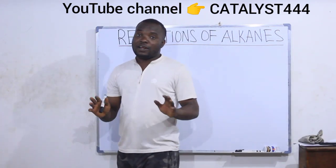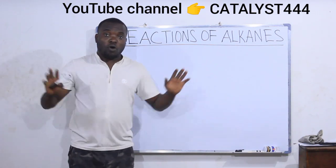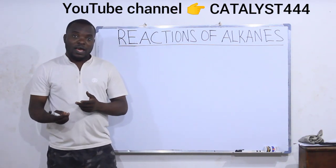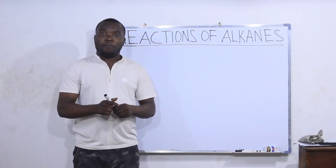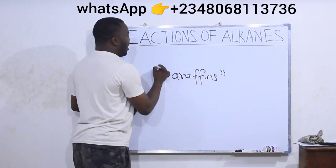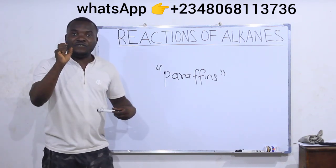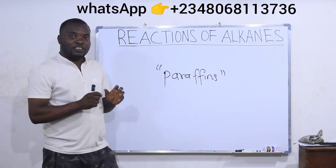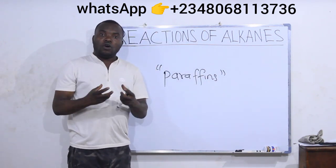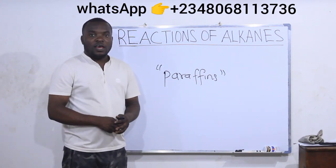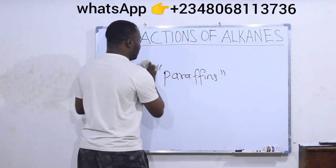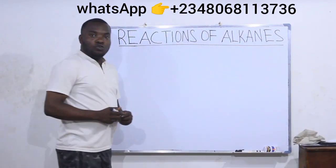Remember, alkanes are not very reactive because they are completely saturated. They don't easily react — they are almost inert. That is why they are known as paraffins. Alkanes are also known as paraffins, and the term paraffin means little affinity. They are not easily attracted to other compounds because they are completely saturated. But under severe conditions, they can react. The first reaction we'll look at is halogenation.